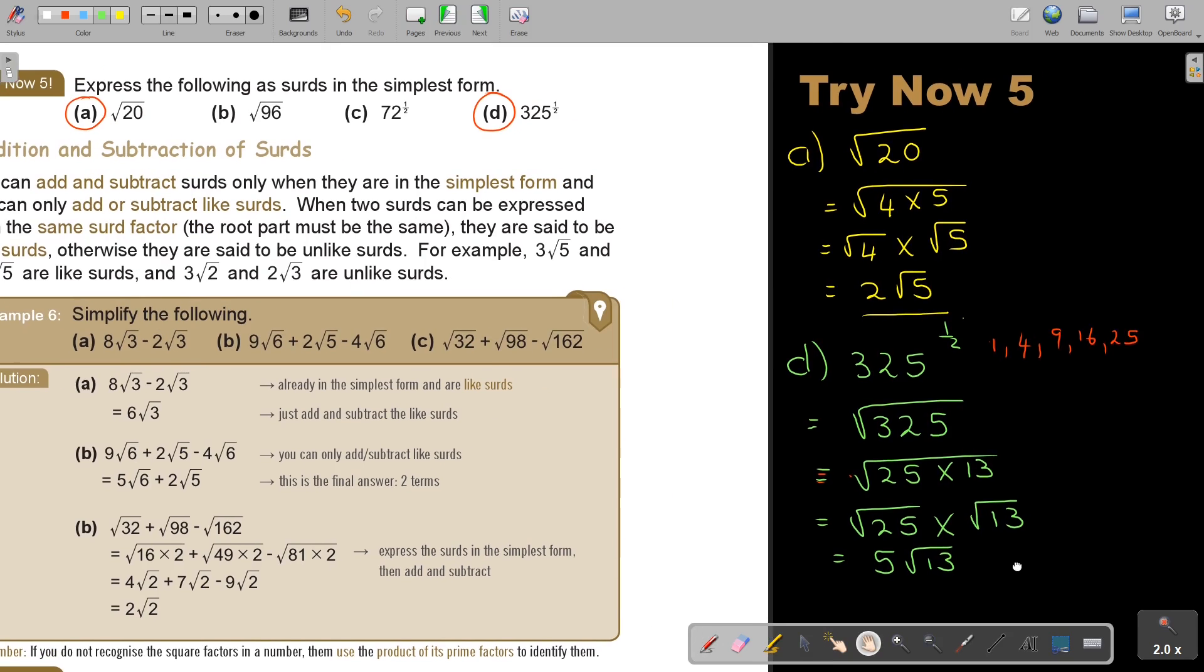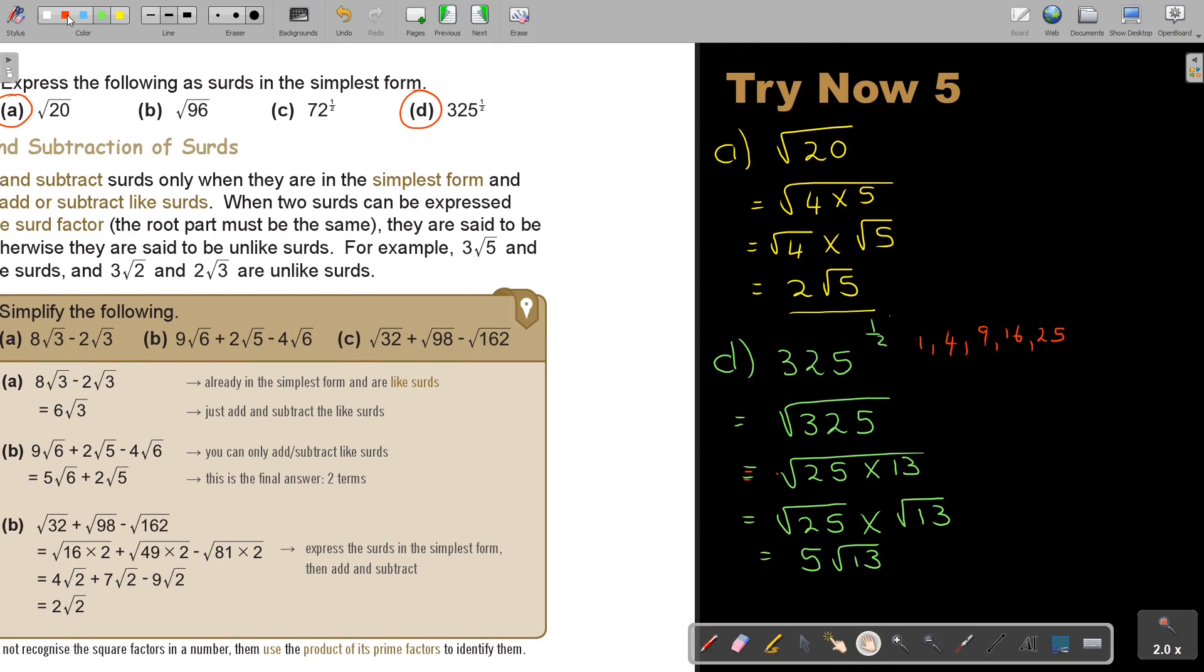But the other method that I also sometimes use is I take 325, and I break it up into prime factors. So, I say, 325, 325, can it divide by 2? No. Can it divide by 3, 7, 8, 9, 10? No.